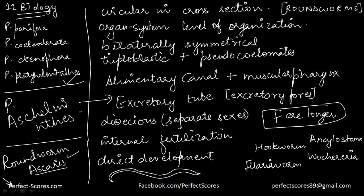To revise phylum Aschelminthes: they are circular in cross section and commonly known as roundworms. They are bilaterally symmetrical with organ system level of organization. They are triploblastic with a false coelom — pseudocoelomates. They have an alimentary canal with a muscular pharynx. Excretion is done through an excretory tube via excretory pores. They are dioecious — sexes are separate — with females usually longer than males. Fertilization is internal and development can be direct or indirect.